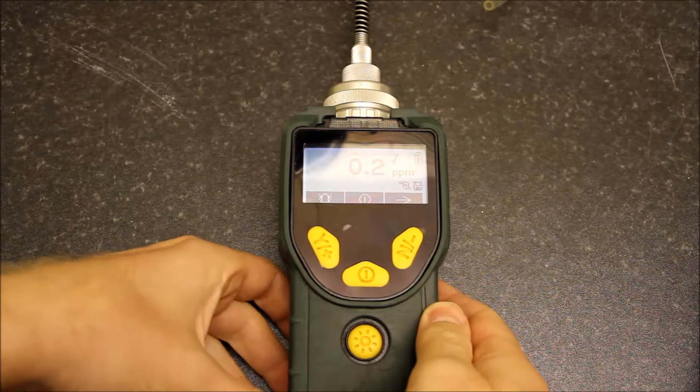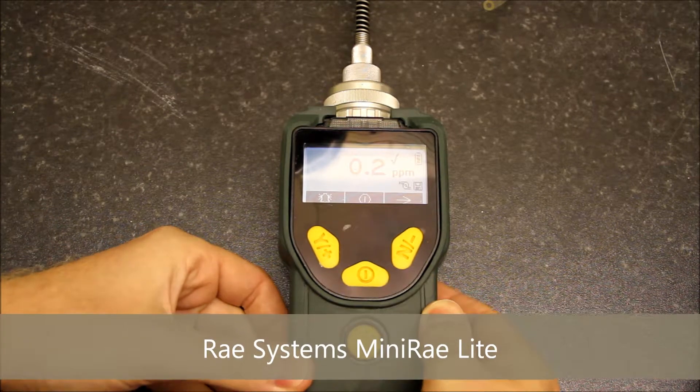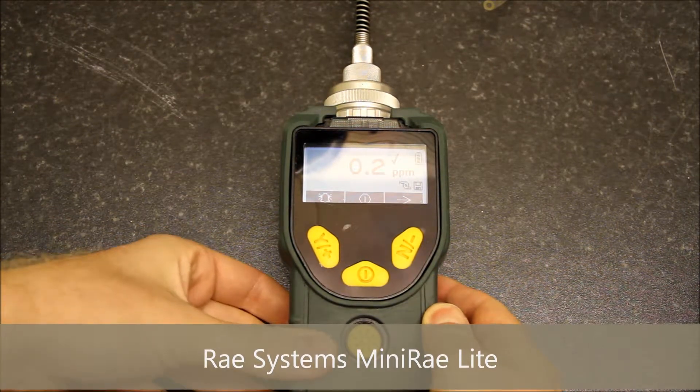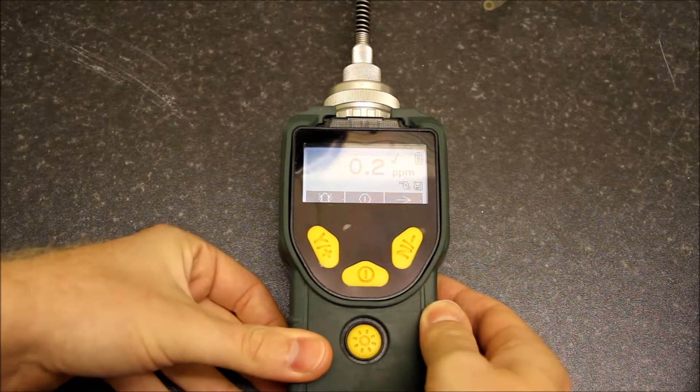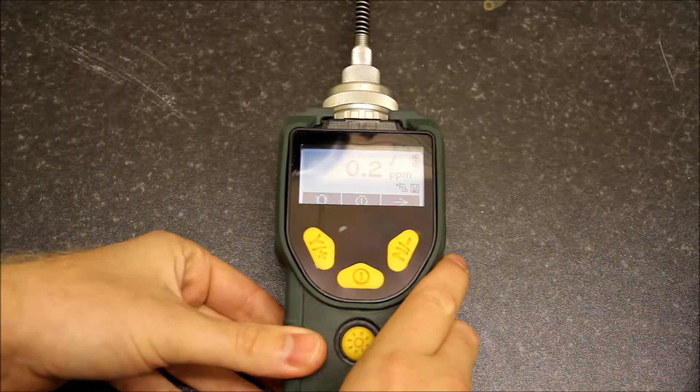Today we're going to be taking a brief look at the Mini Ray Light PID monitor from Ray Systems. The Mini Ray Light is a simple PID monitor designed to take spot check measurements, primarily for the environmental remediation sector.